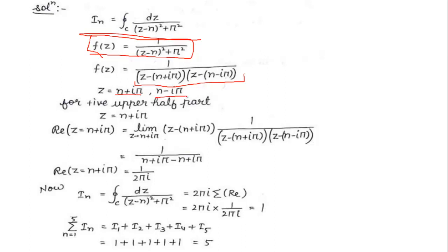For the positive upper half plane, n+iπ should be the correct solution. So for n+iπ we calculate this value. We solve the contour integral by substituting z = n+iπ. When you solve this you will get 1/(2πi).